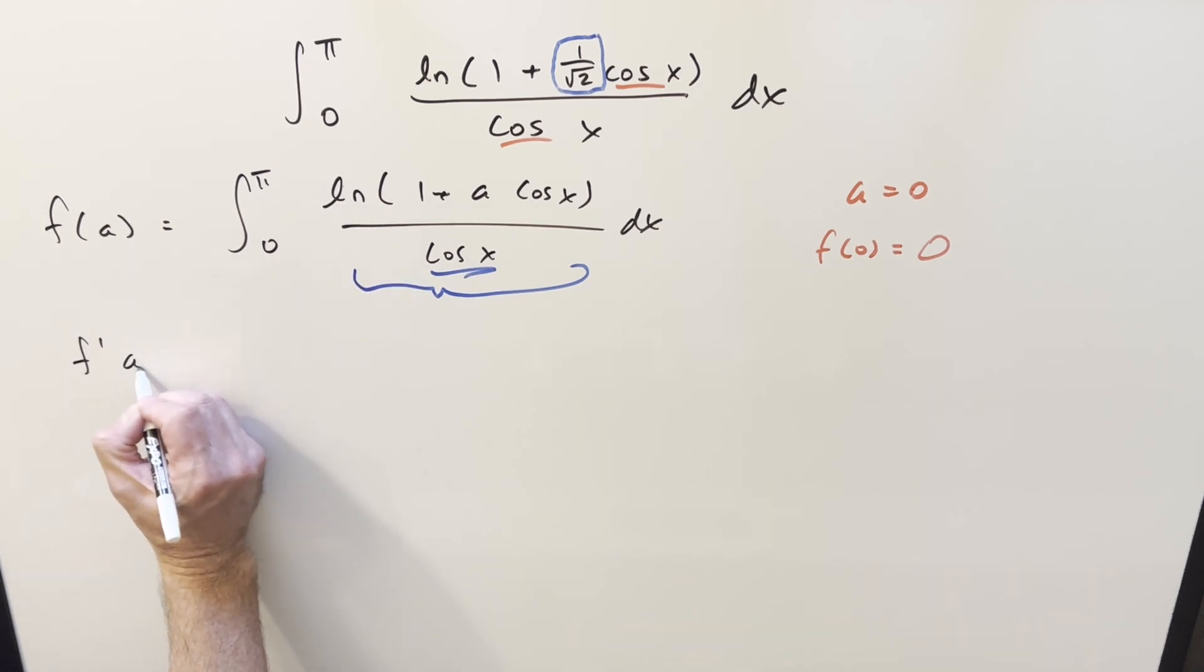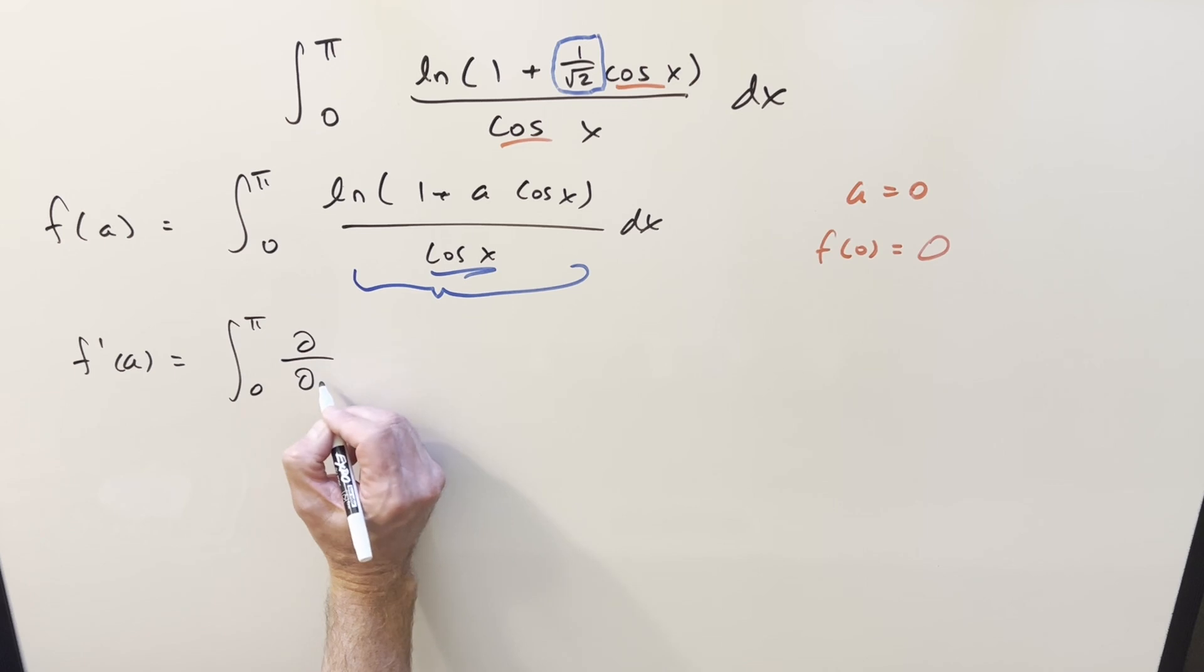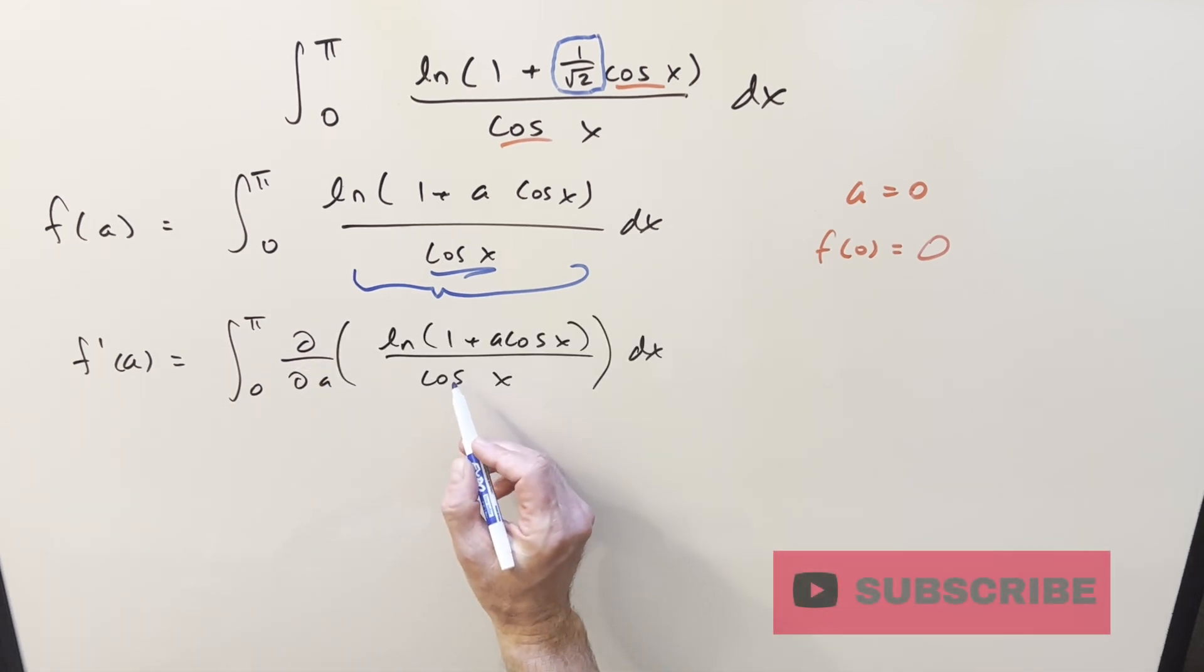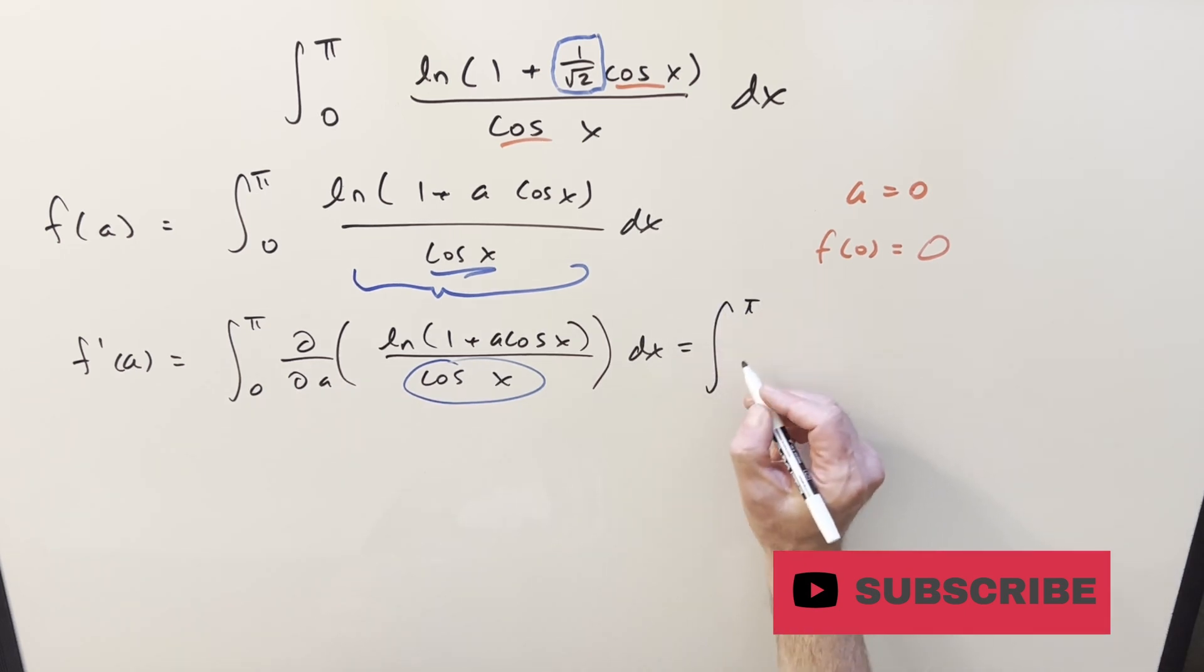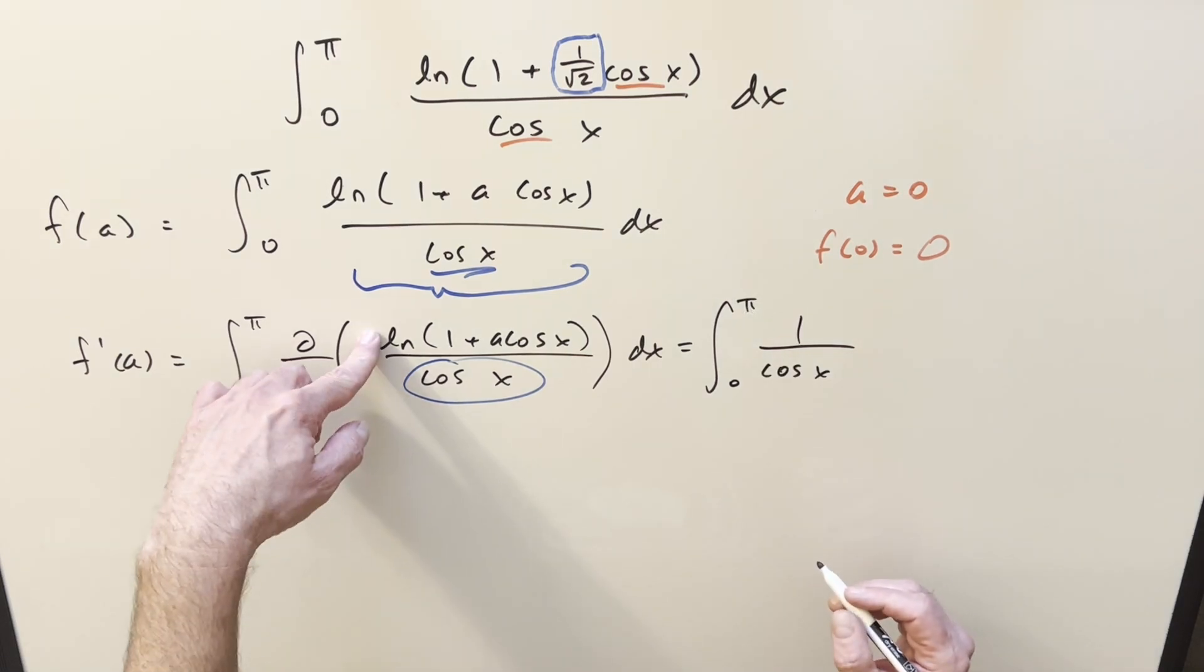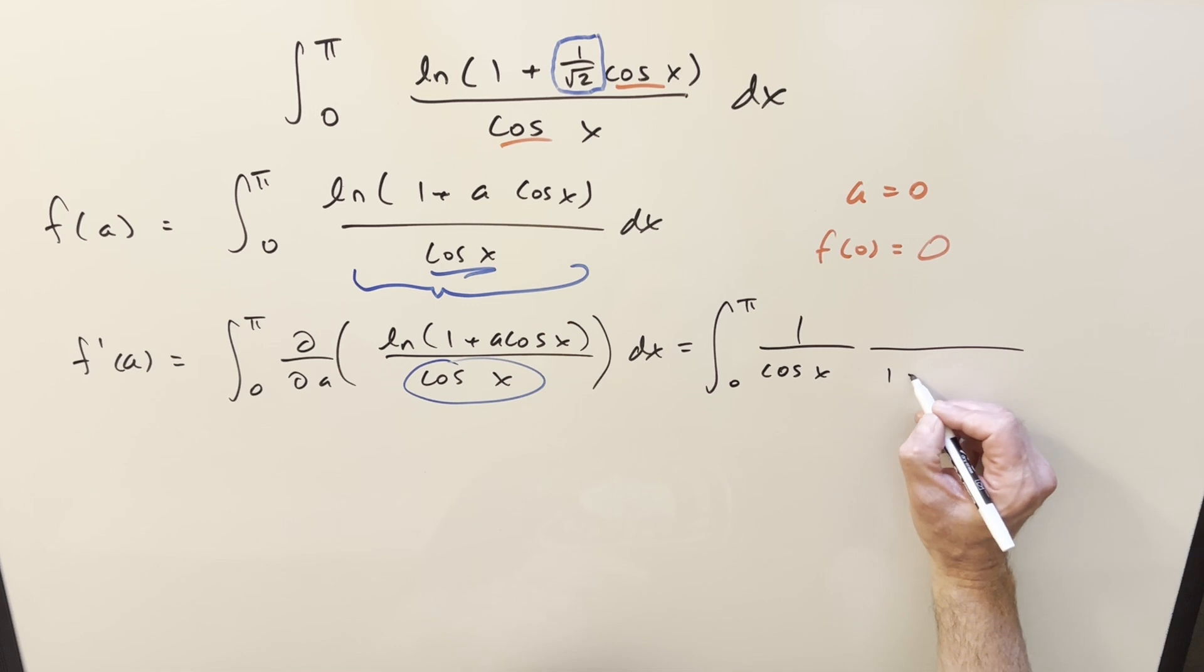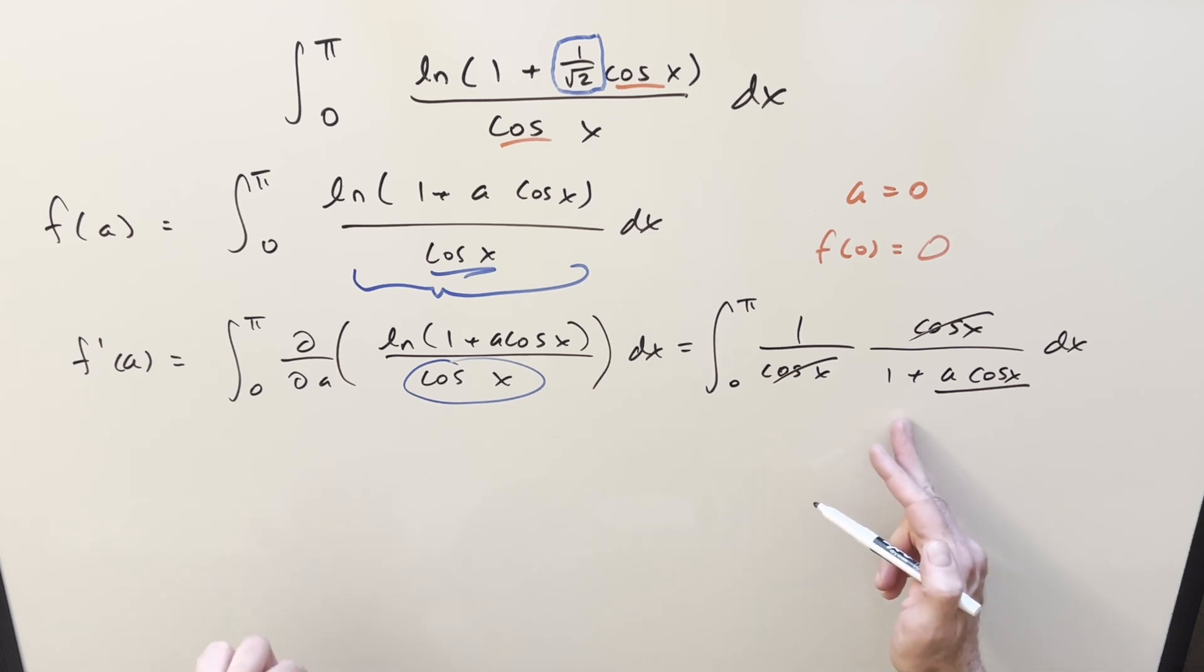So go ahead and differentiate this with Feynman's trick. We're going to be differentiating with respect to a. The convergence is okay, so we'll bring it inside the integral and differentiate as a partial with respect to a. When I differentiate this, the denominator, that's just going to be completely a constant. So we're going to have integral zero to pi, one over cosine x. And then the derivative of the numerator, this is just going to be one over one plus a cosine x. Chain rule, the derivative of this is just going to be cosine x dx. But then I can cancel the cosines here, and we're left trying to integrate something pretty simple, just one over one plus a cosine x.